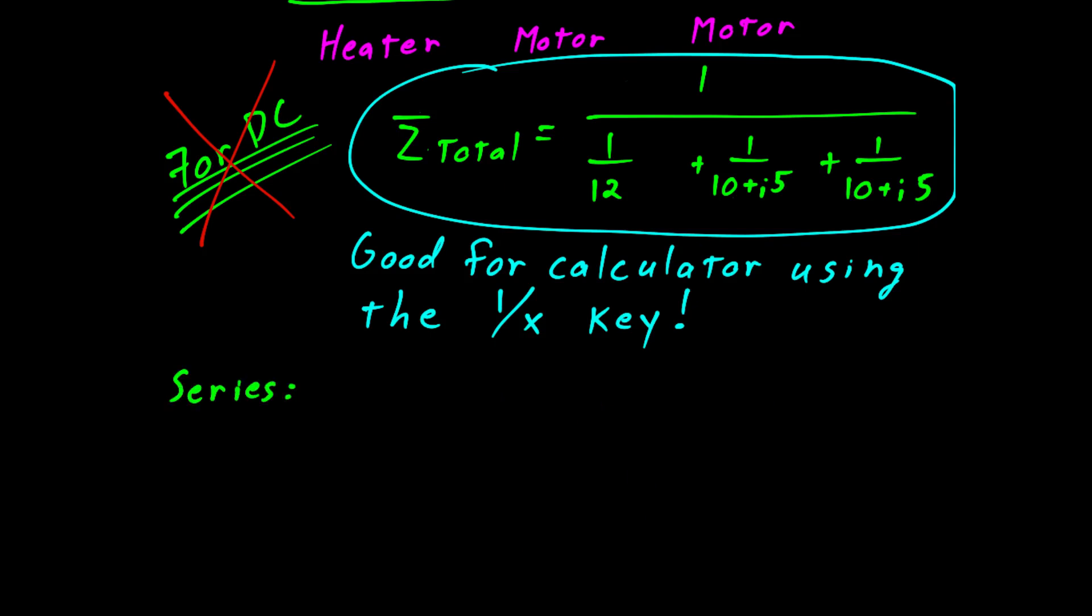And don't forget the rules. If you're dealing with a series circuit, you can add the impedances, just like we did with that motor. The 10 plus J5 is a series circuit. In a parallel circuit, we can add admittances. So this particular circuit, the total admittance is equal to the sum of the individual admittances, where Y1 is equal to 1 over 12, Y2 is equal to 1 over 10 plus J5, and admittance Y3 is equal to 1 over 10 plus J5.